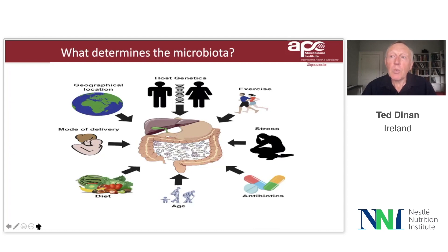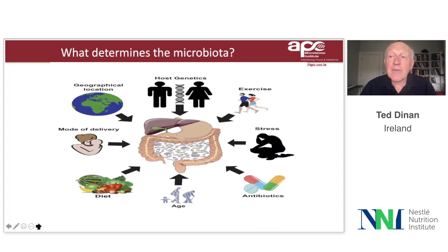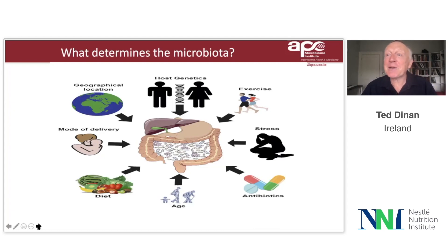Other important initial factors include exposure to antibiotics. If a baby is born prematurely, they're much more likely to be exposed to antibiotics. We know that if a baby has been exposed to more than one course of antibiotics in the first year of life, the chances of that child being overweight or obese later on are radically increased. Other major factors in determining the gut microbiota would be diet, the genetics of the baby, and whether the child is very active or not — a very active child will have a somewhat different microbiota to a less active one.